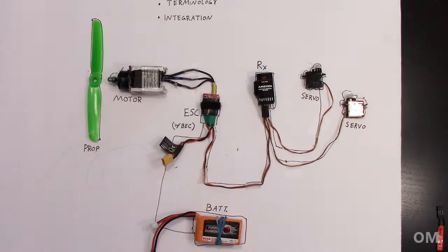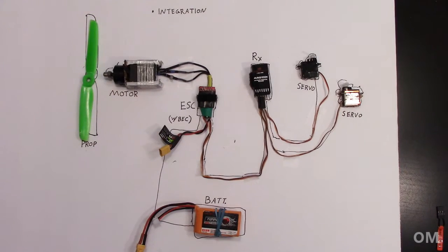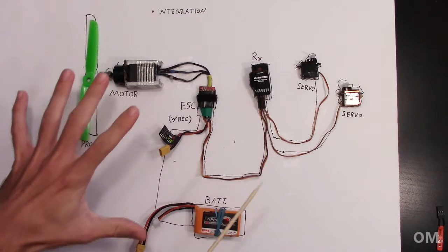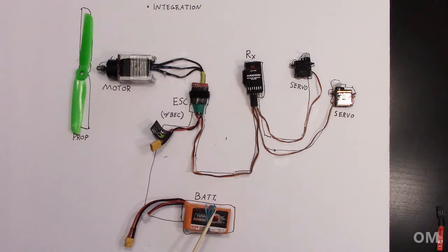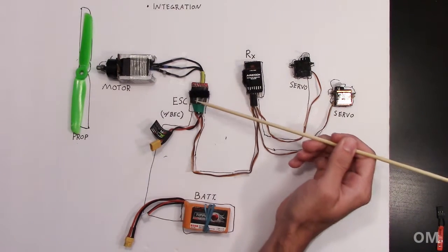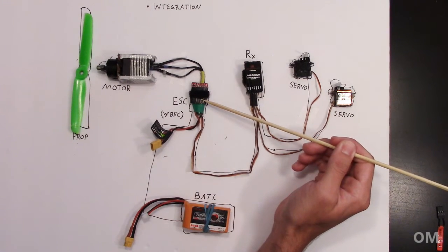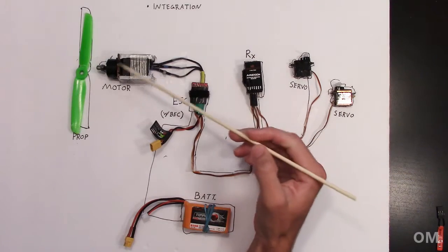I know, it sounds pretty simple. You probably knew that. All right. So to start out here, let's first just go over everything that we see here on the table. So we have our battery that provides our electrical power, obviously. We have our ESC or electronic speed control. We have our motor here.